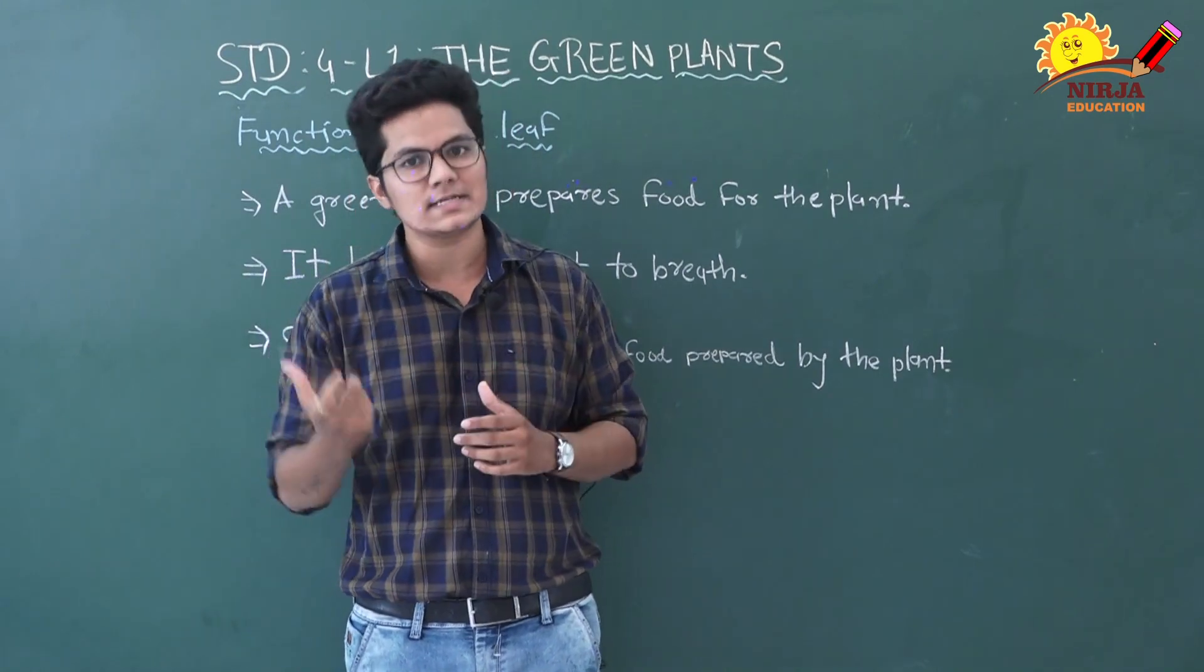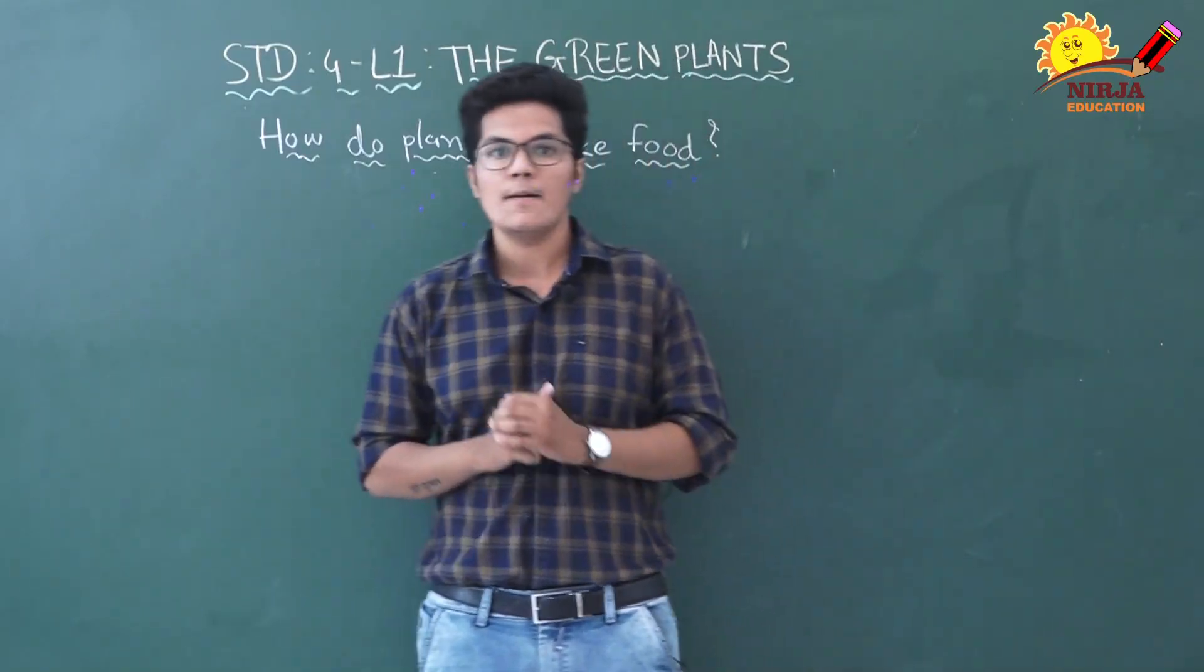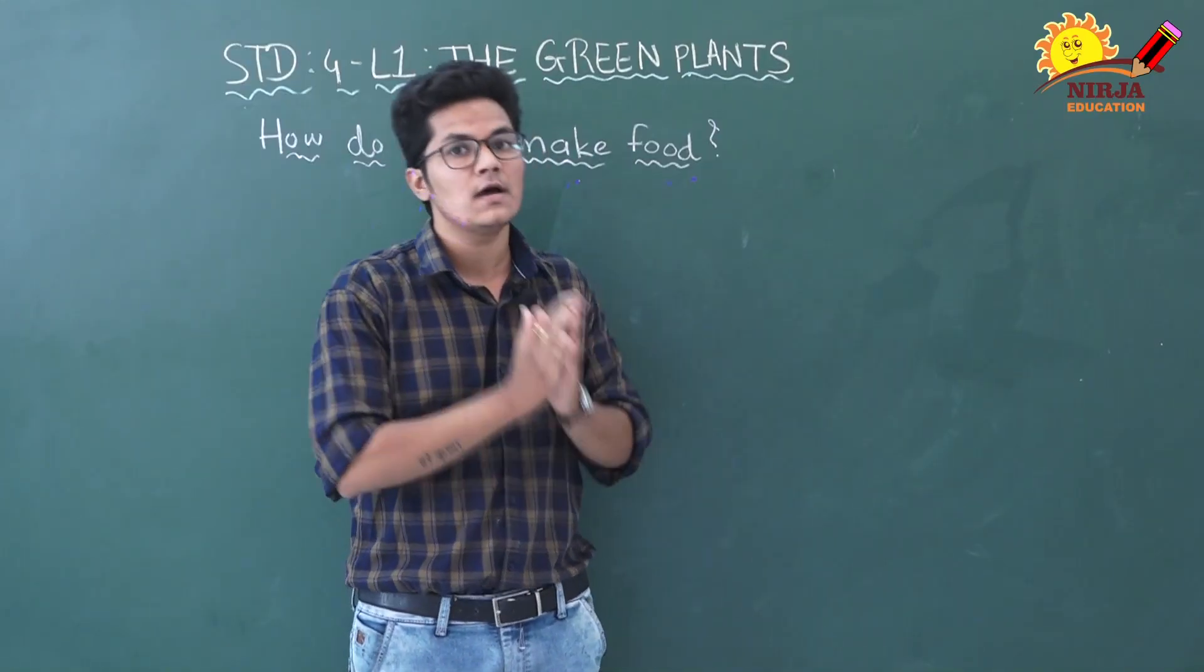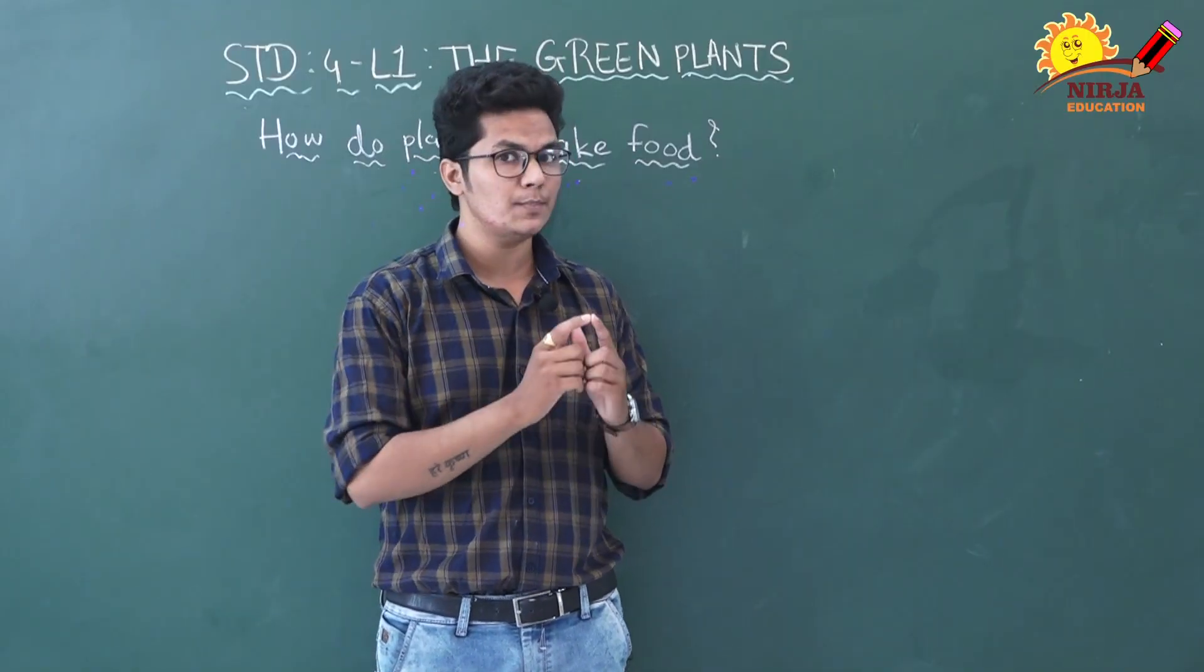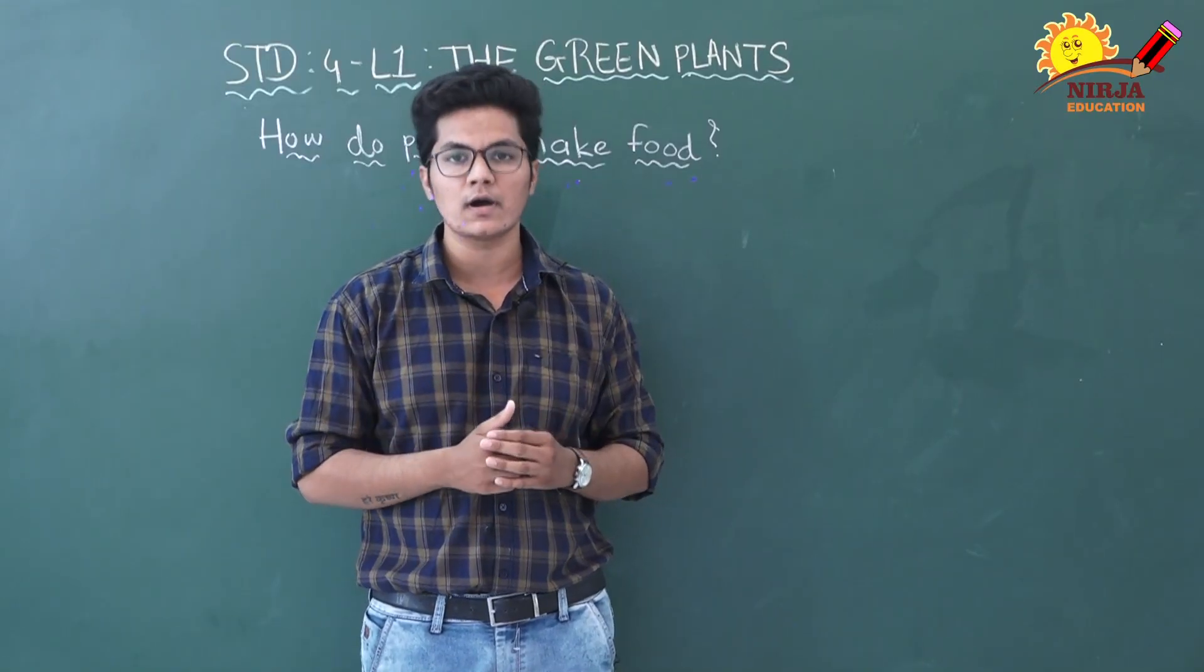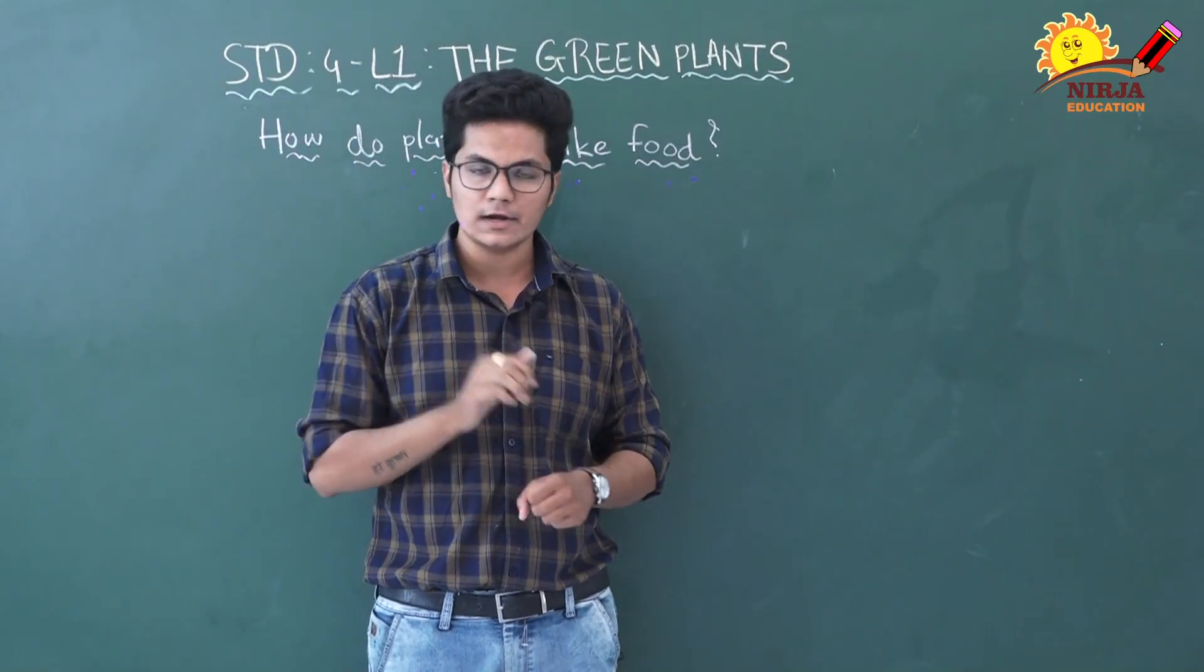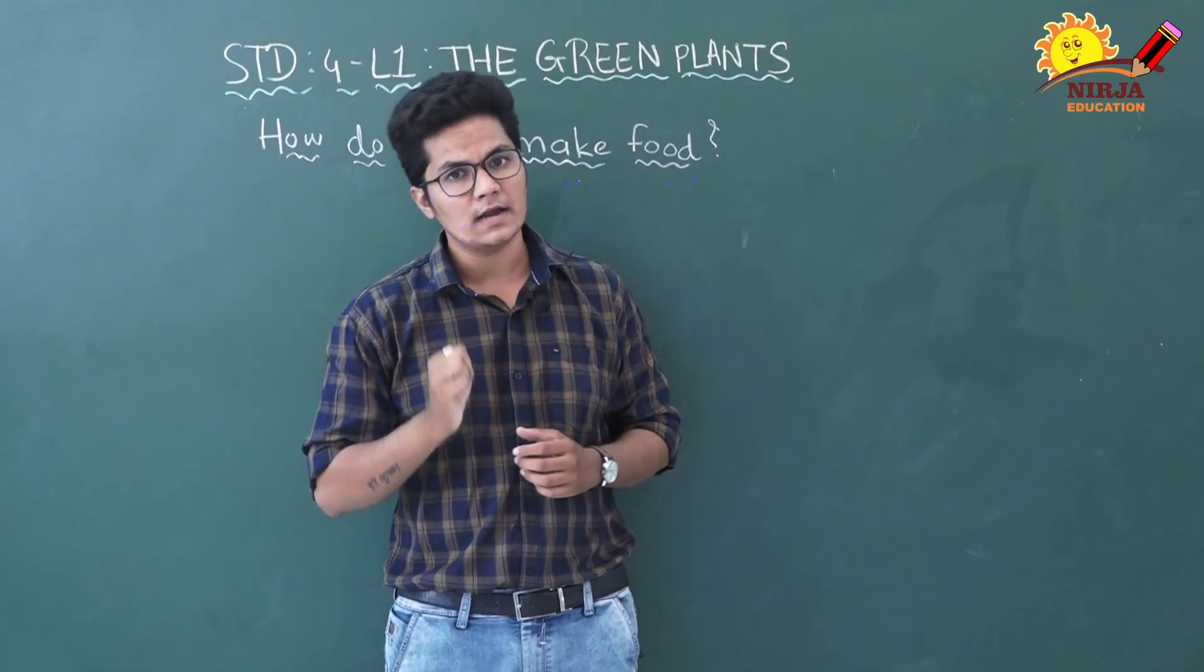But how do plants make food? Plants need four things to make food: carbon dioxide, water, chlorophyll, and sunlight. Without these four things plants cannot make food. Most of the leaves are green in color because of the presence of chlorophyll. Chlorophyll is a substance that absorbs energy from the sunlight.